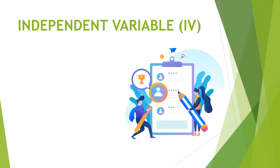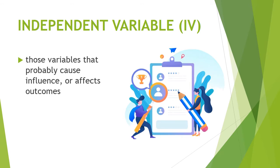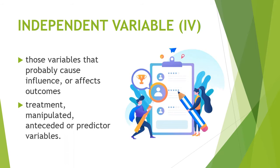First is the independent variable, or IV, as we are going to call it during the course of our research study. Independent variables are those variables that probably cause an influence or affect any outcomes. They are sometimes called the treatment, manipulated, antecedent, or predictor variables. In layman's terms, an IV is a cause variable since they are the ones affecting the results of your study.